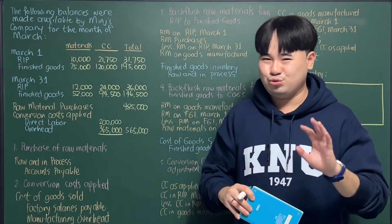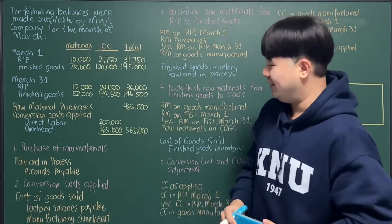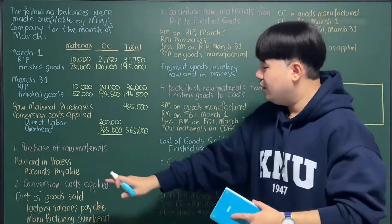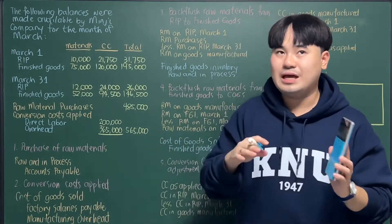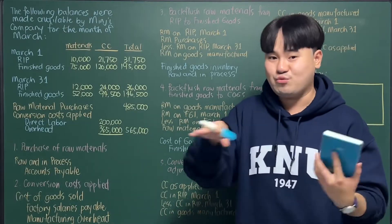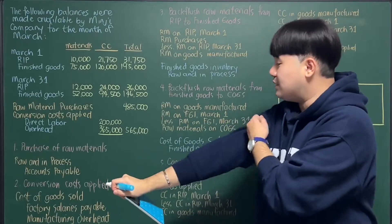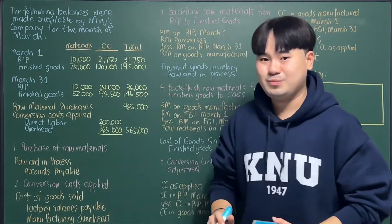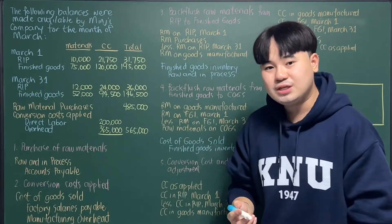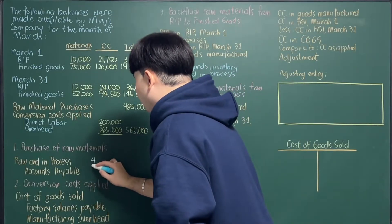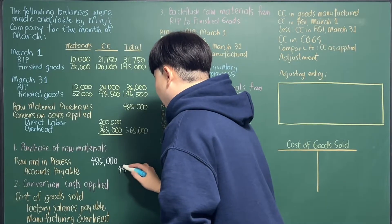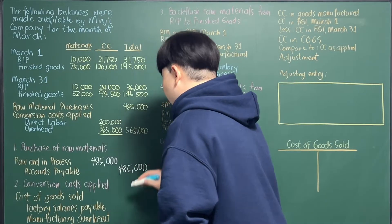Let's write the journal entries and do some backflush. First is your purchase of raw materials. We simply debit raw and in process account — not raw materials inventory, because this is JIT and you put it directly in the production process. So debit raw and in process, credit accounts payable or cash, for the raw material purchases of $485,000.